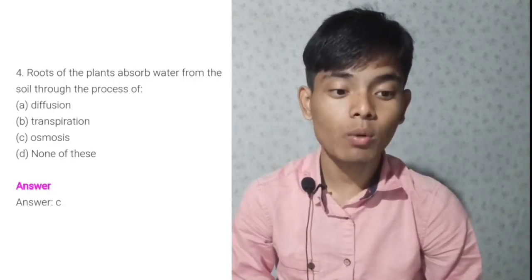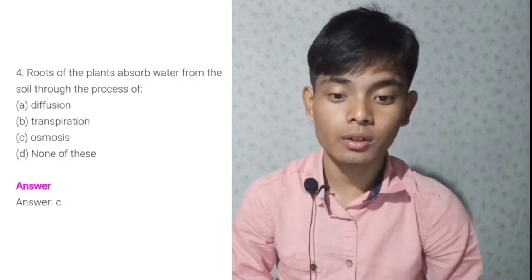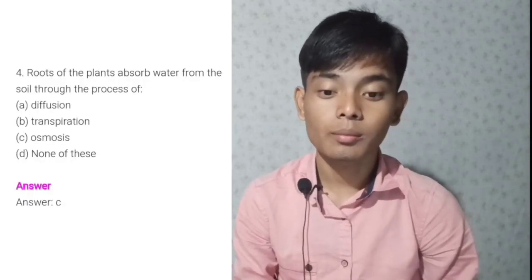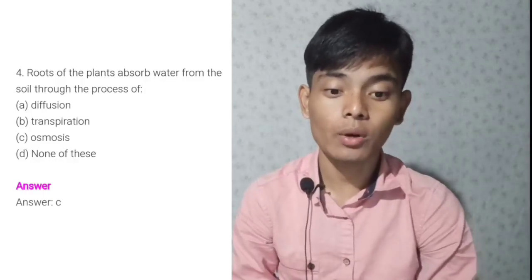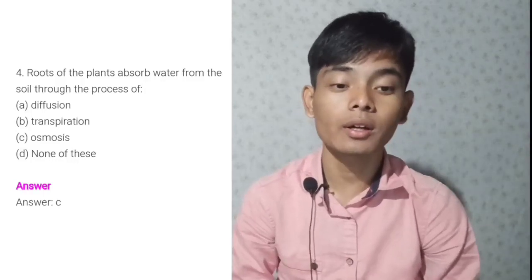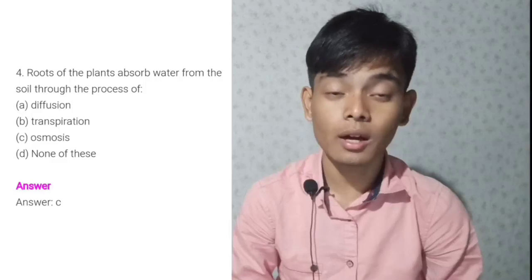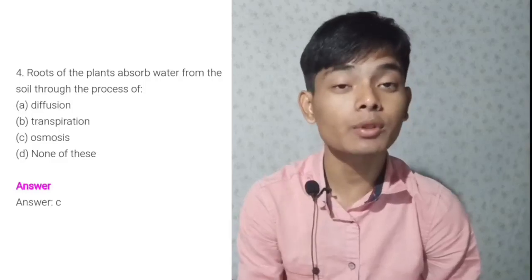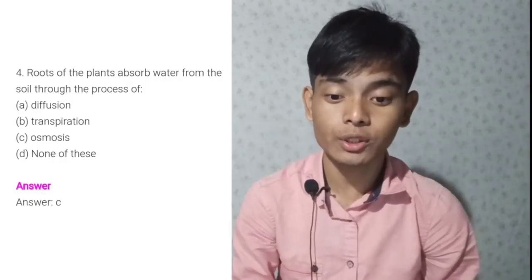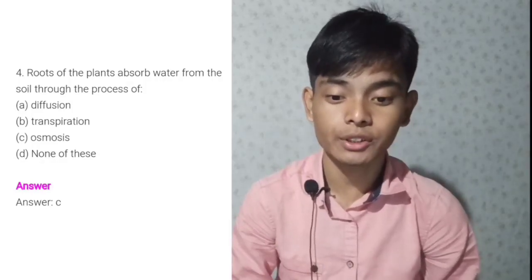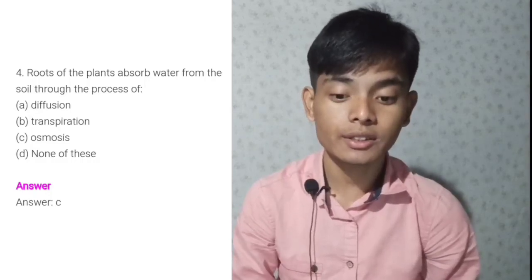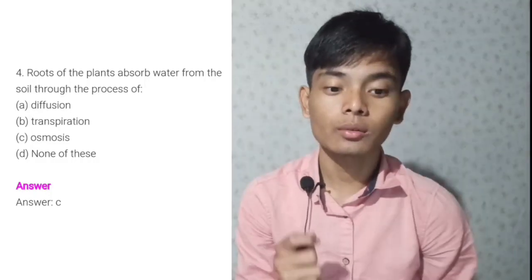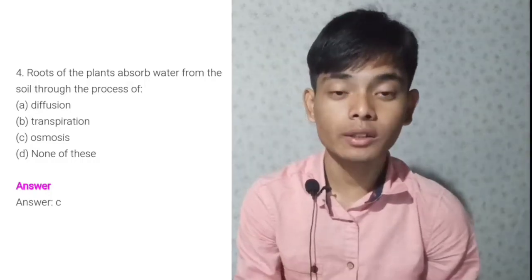Question number four: Roots of the plants absorb water from the soil through the process of? A — diffusion. B — transpiration. C — osmosis. D — none of these. The answer is C — osmosis. Intake of water through roots in plants is called osmosis.